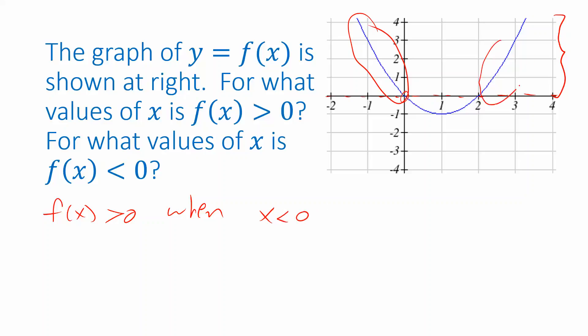And we also want this part of the graph, which occurs when x is greater than 2. And then we're asked to figure out when is f of x negative. That's going to be this region here, between those two points. So x should be greater than 0, and it should be less than 2.